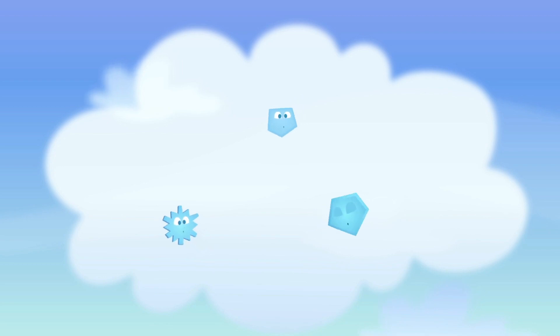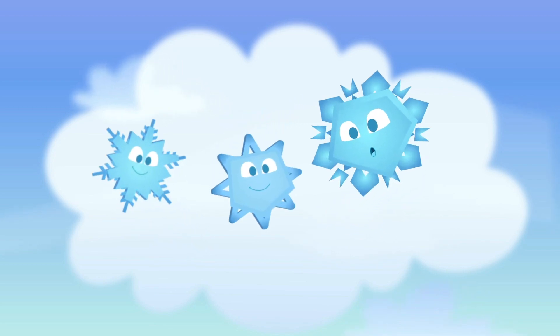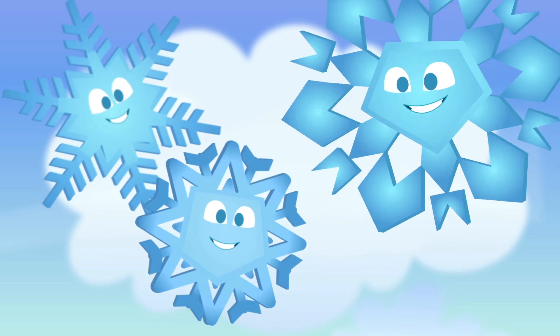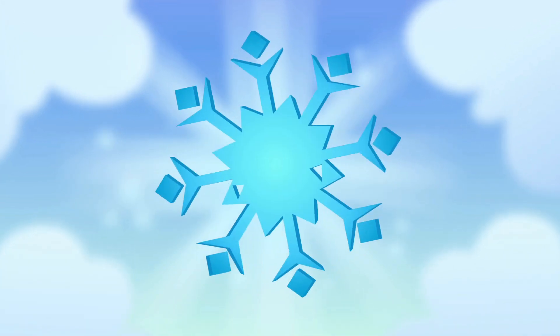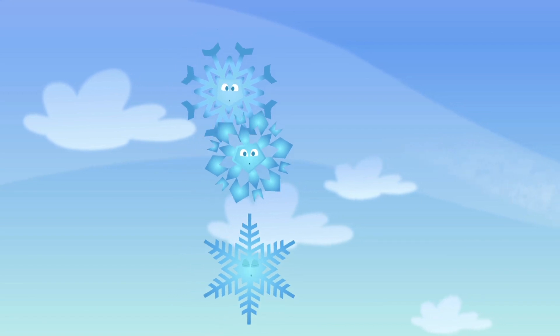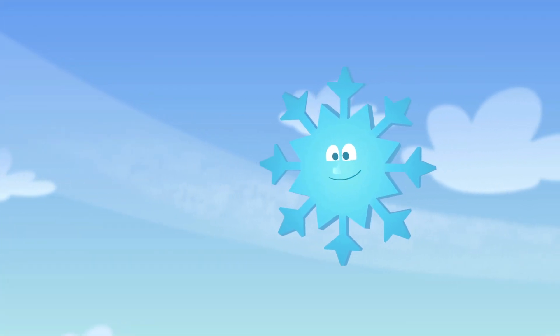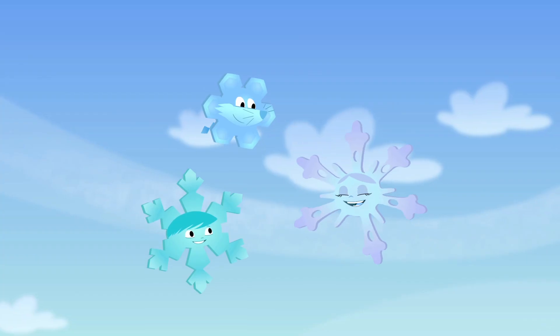Water vapor in clouds gets real cold and makes snowflakes, so I'm told. It doesn't take very long at all to become snowflakes that fall. The snowflakes are the same — different shapes and sizes and names. It all depends on how cold it is and how much water's in the air. Just like I said.